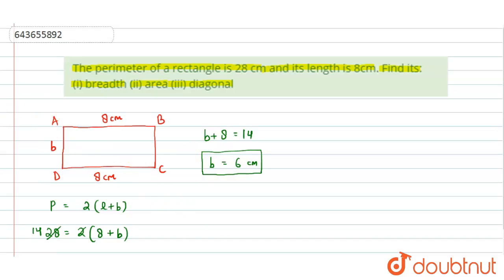For the second part, we know that the area of a rectangle equals length times breadth. Putting the values: length is 8 centimeters, breadth is 6 centimeters, so the area is 48 square centimeters.